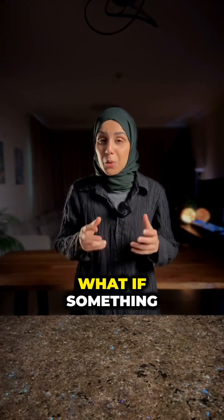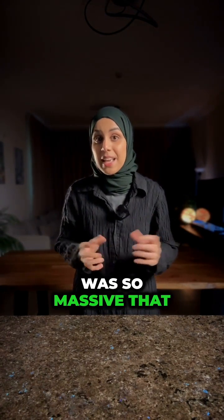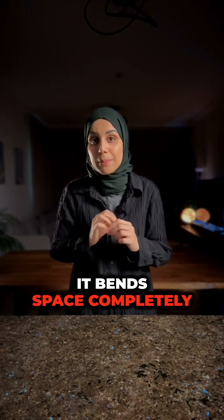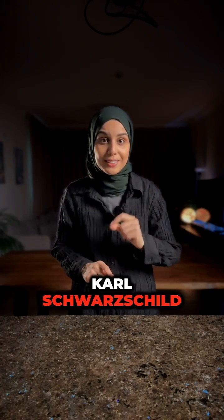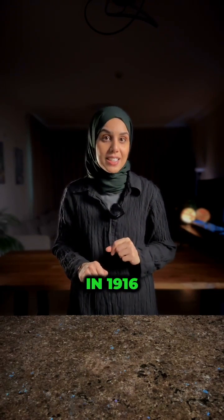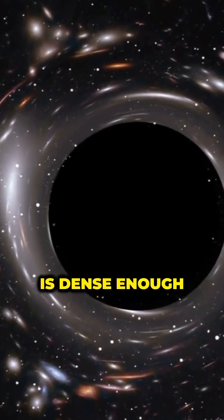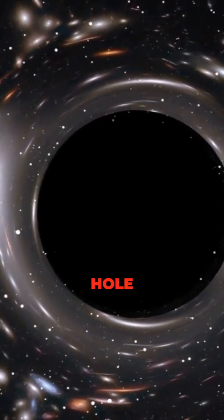But let's take this to the extreme. What if something was so massive that it bends space completely around itself? That's what physicist Carl Schwarzschild figured out in 1916. If an object is dense enough, it creates a black hole,